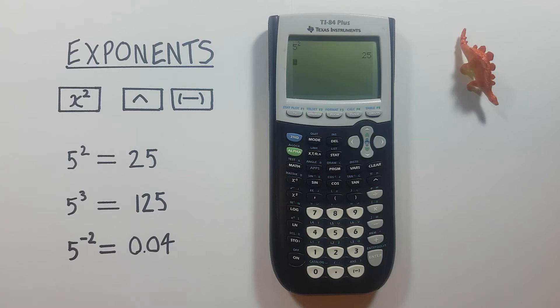But what about an exponent that isn't a 2 or a square? Well that's where we use the up arrow or caret key. So if we wanted to solve for 5 to the power of 3, first we would enter the 5 again.